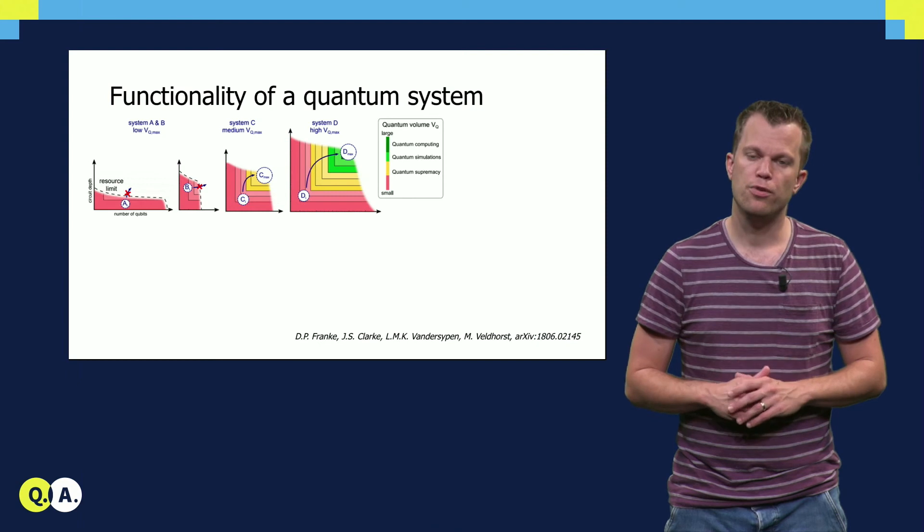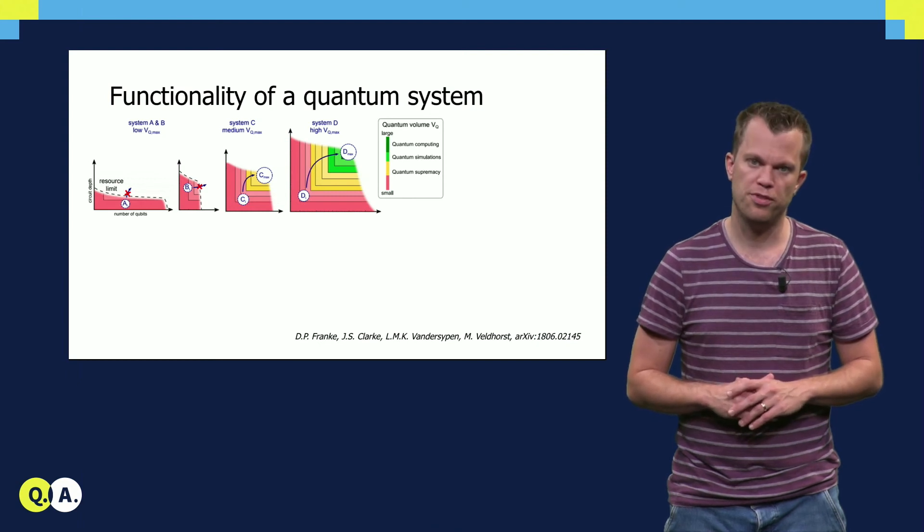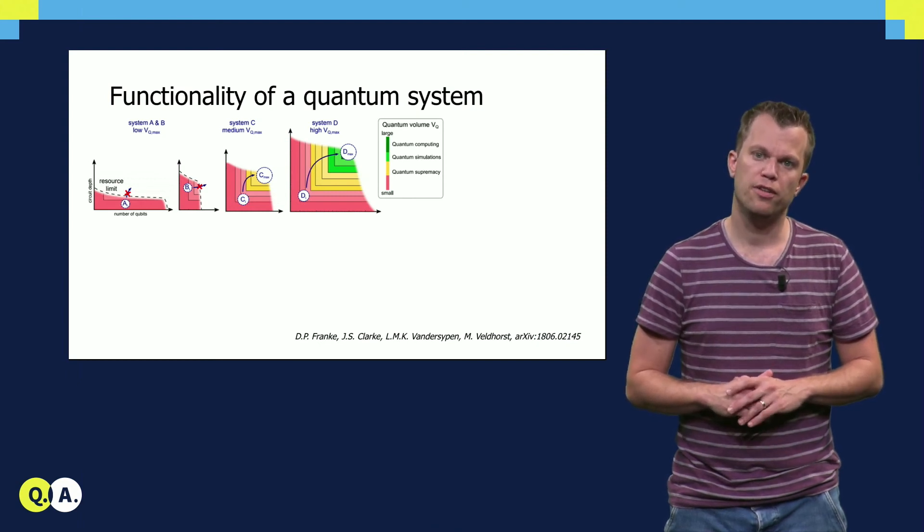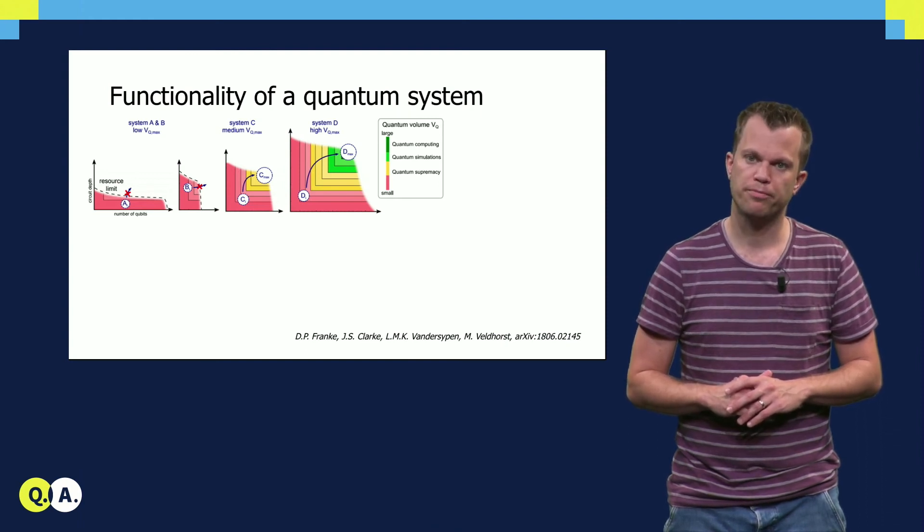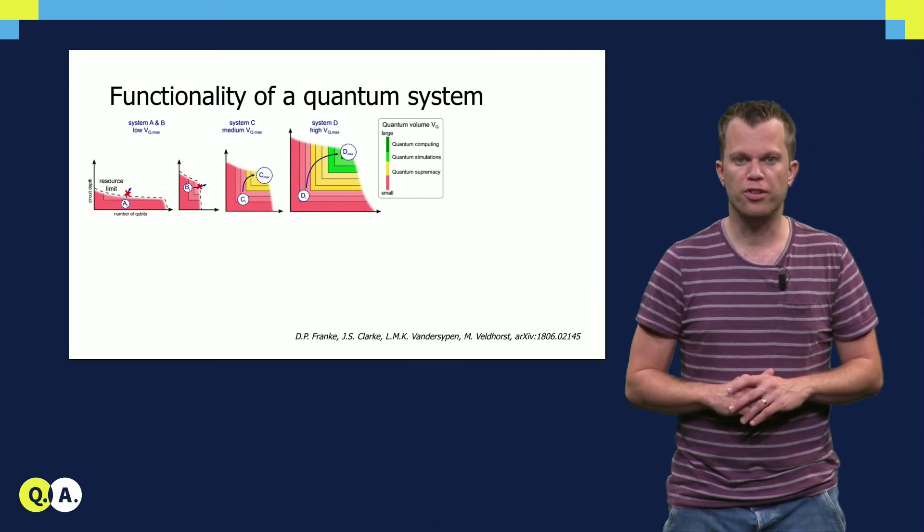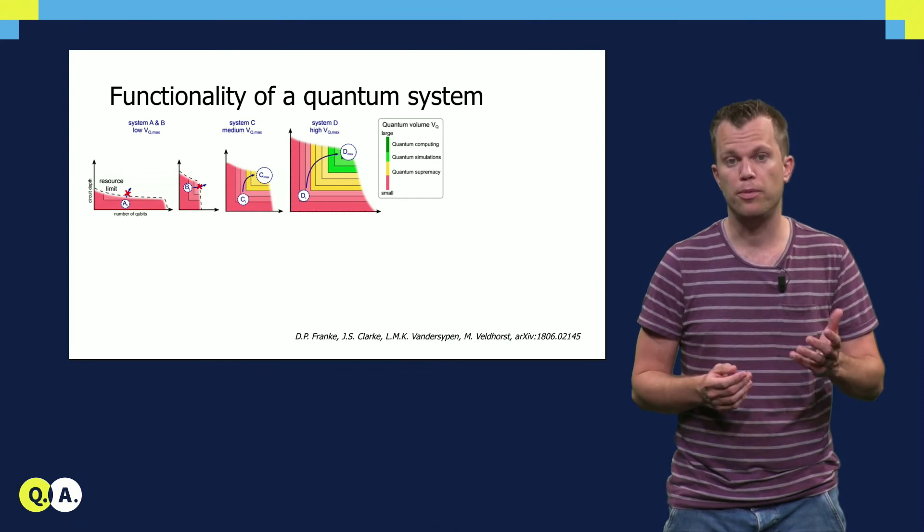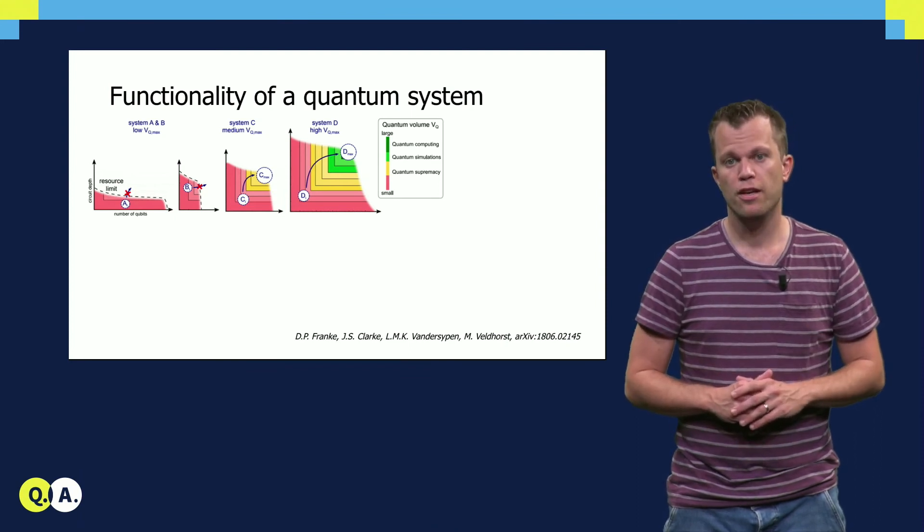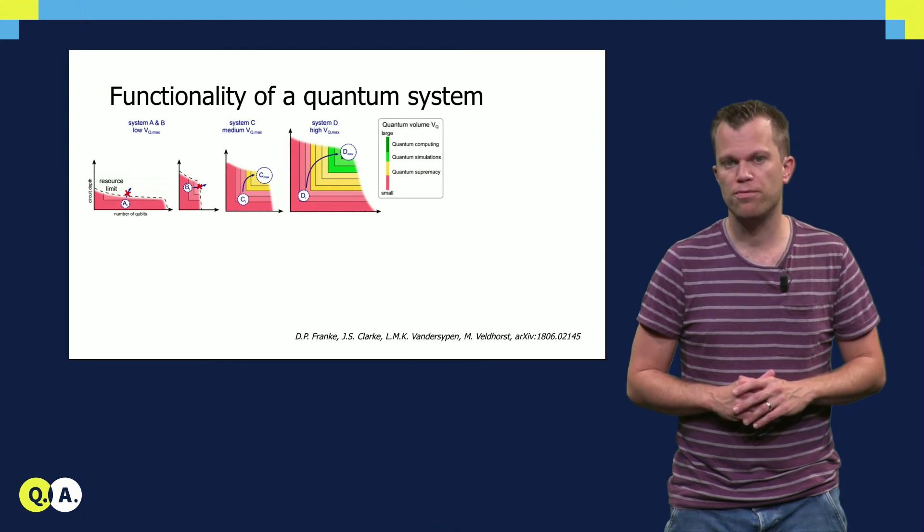In the figure here you see some fictitious qubit platforms. The functionality of each qubit platform is described according to its quantum volume. The usefulness of a platform will depend on the number of qubits available, but also on the amount of operations that can be executed on them.